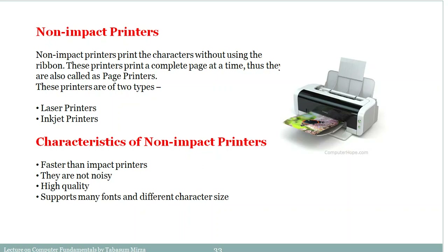Now coming to the current generation printers we generally use in offices or homes: non-impact printers. Non-impact printers do not use a ribbon. These printers can print a whole page at a time, so they are also called page printers. There are two categories: laser printers and inkjet printers. They are less noisy and faster than impact printers because they can print a whole page at a time. They are very high quality devices that support all fonts and character sizes, but they are mostly expensive.